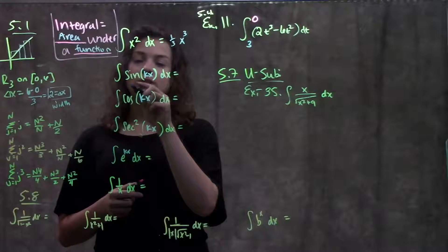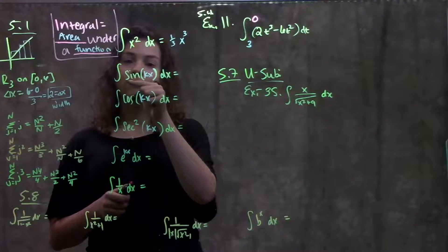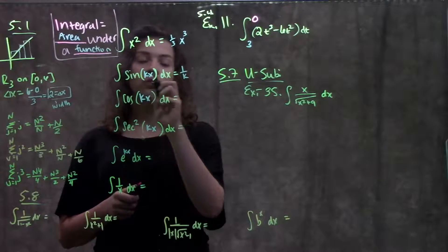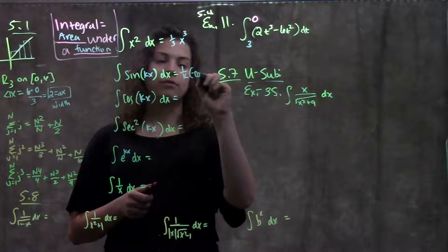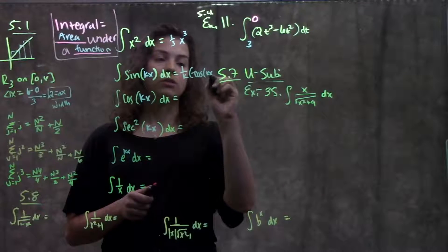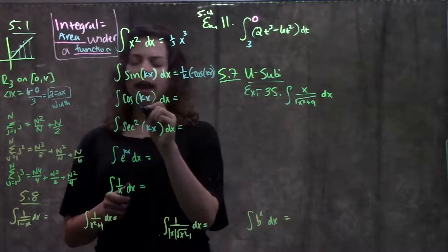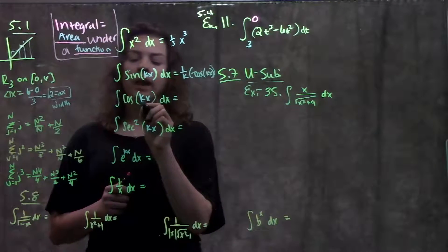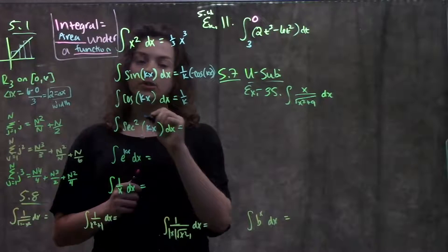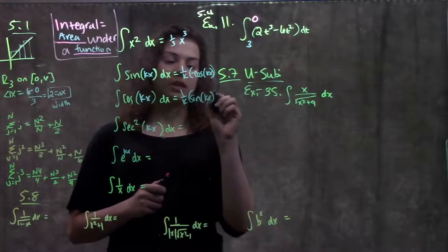The integral of sine of kx - for this function, I'm going to bring this coefficient out to the front and flip it, so it becomes 1 over k times integral of sine is negative cosine. Remember, this angle here always stays the same. No matter what we do, it will always be that same kx. Similar over here with cosine, I bring this coefficient out to the front and flip it, so it's 1 over k times integral of cosine is sine kx. Remember, angle never changes.